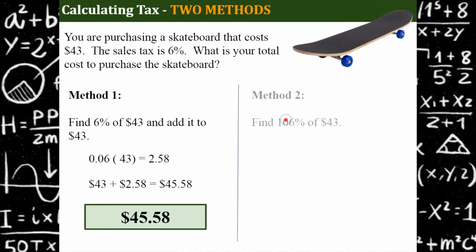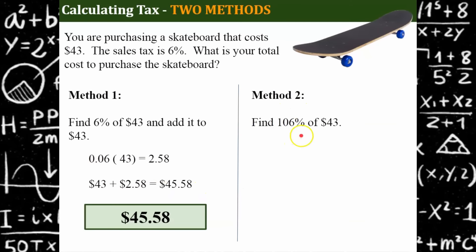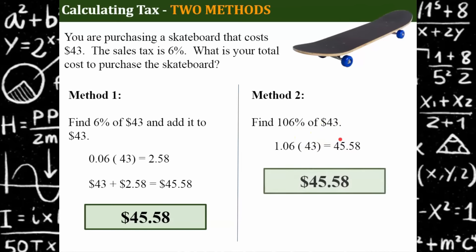Now method two: I'm going to find 106 percent of $43. You're probably thinking, where did I get 106 percent? Well, I'm going to pay 100 percent of the cost of the item plus six percent — that's 106 percent. So if I can think about it this way, I don't have to do a separate addition step because it's all here. So 106 percent written as a decimal multiplied by 43 is equal to $45.58. You can see we got the same answer.